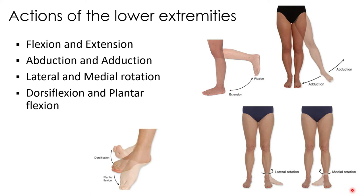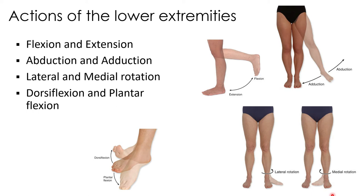Dorsiflexion and plantarflexion are special movements that only occur at the ankle. Dorsiflexion is when the superior surface of the foot moves toward the leg, and plantarflexion is when you point your toes inferiorly. Inversion and eversion occur in the intertarsal joints of the foot — during inversion the sole turns medially, and during eversion the sole turns laterally.